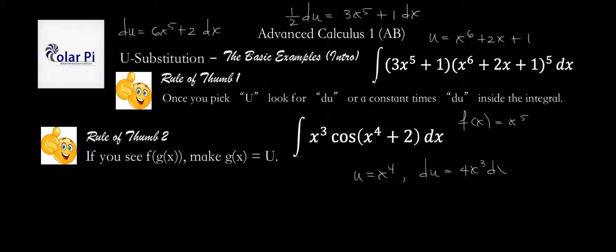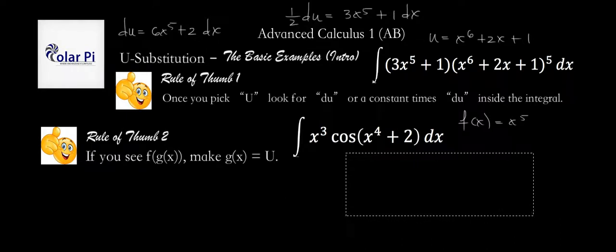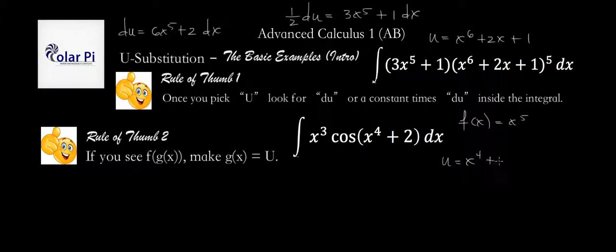But rule of thumb number 2 would tell you that the correct choice is u equaling x to the fourth plus 2.